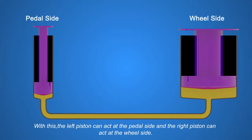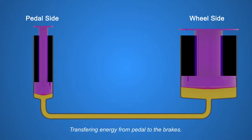With this, the left piston can act at the pedal side, and the right piston can act at the wheel side, transferring energy from pedal to the brakes. Now we know the theory. Let's see how this works in real.